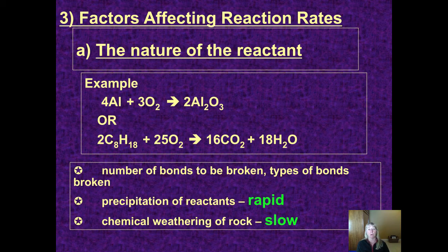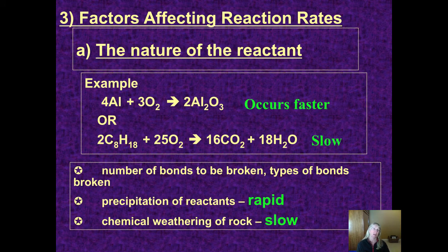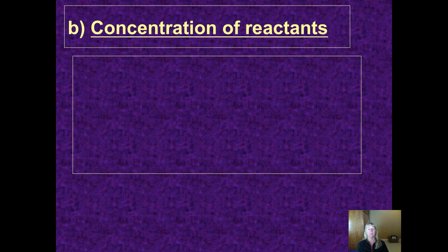The number of bonds to be broken or those to be reformed or the types of bonds, they could be quite strong, might impact your reaction rate. When you see a precipitation reaction where solid forms, that can happen quite quickly. But in the chemical weathering of rock, that's a very slow reaction rate. It proceeds, but slowly.